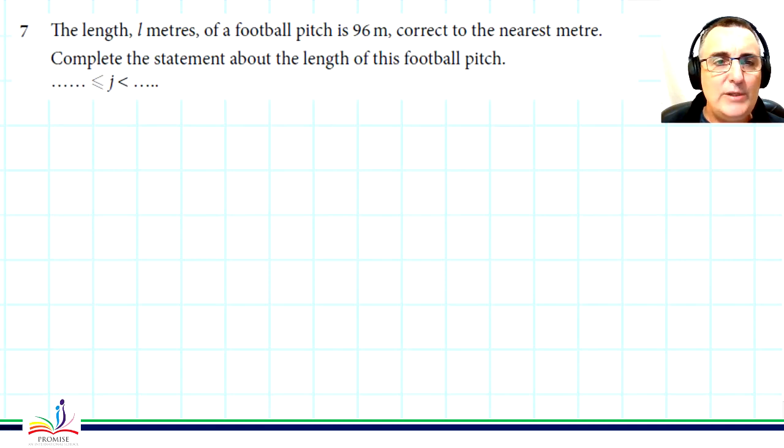Complete the statement about the length of a football pitch. There's a typo there that J should be L. And so what are the upper and lower boundaries for this length of the pitch?